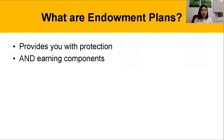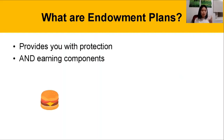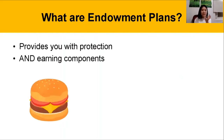As stated here, the endowment plan provides you with protection and earning components. This plan, basically, if you were to consider it as a burger, it has many potential components that you can add onto it, like toppings.